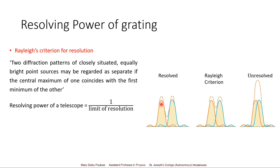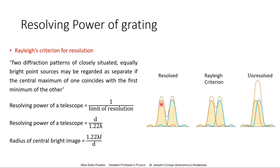For a telescope, resolving power is mathematically obtained as the diameter of the aperture D divided by 1.22λ, where λ is the wavelength of the light being observed. The limit of resolution is defined as dθ, and the radius of the central bright image of the point object is obtained from 1.22λf divided by the diameter of the aperture lens d, where f is the focal length of the lens.